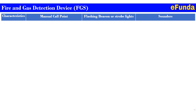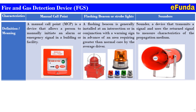First is the definition. A manual call point (MCP) is a device that allows a person to manually initiate an alarm or emergency signal in a building or facility. Referring to the picture, one can see the manual call point assembly and the action to take in case of fire, which is written on the device. Similarly, a flashing beacon is generally installed at an intersection or in conjunction with a warning sign, in advance of an area requiring greater than normal care, using a flashing or strobe light. Various colors of strobe lights are shown with different color lenses.